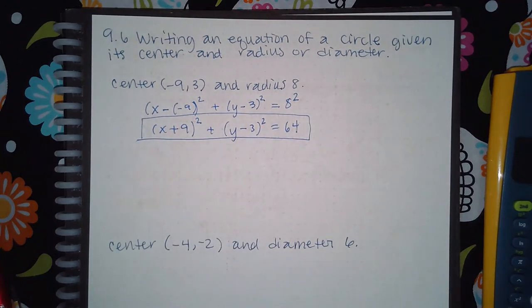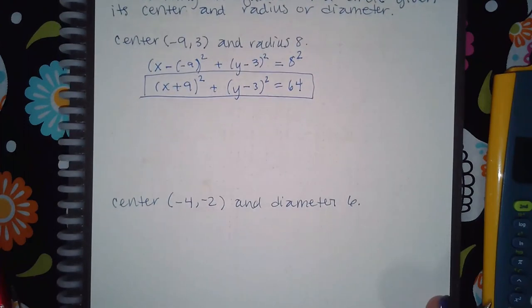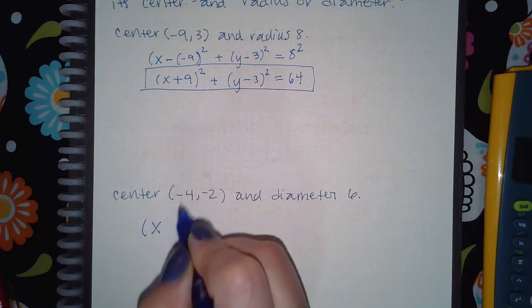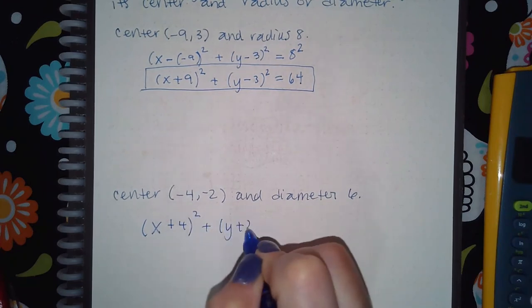Now over here though, I have to do the same thing. So I can say this is going to be x, opposite is plus 4, and then y, the opposite would be plus 2.